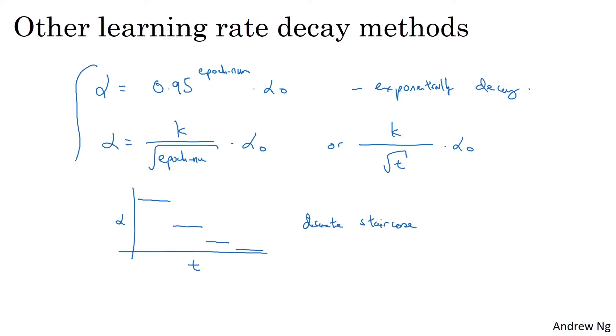So far we've talked about using some formula to govern how alpha the learning rate changes over time. One other thing that people sometimes do is manual decay. And so if you're training just one model at a time, and if your model takes many hours or even many days to train, what some people will do is just watch your model as it's training over a large number of days, and then manually say, oh, it looks like the learning rate slowed down, I'm going to decrease alpha a little bit.